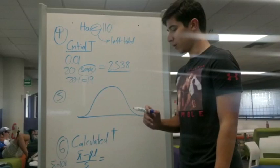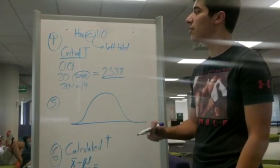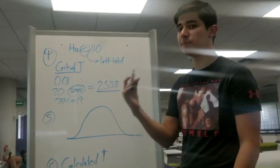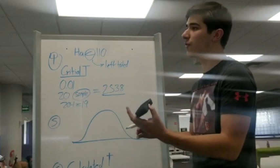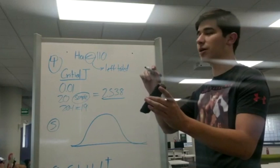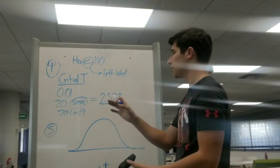So the next step, step number four, is to find the critical T. To find the critical T, we need the significance level. And in this case, it's 0.01. And the number of the students that participated in the sample. In this case, it's 20. But because it's a sample, we're going to subtract 1 from the 20, making it 19. And as we have already the numbers to find the critical T, we're going to look for them in the T table. And we're going to find the number 19 with the 0.01. And where it matches is 2.538. That will be our critical T.